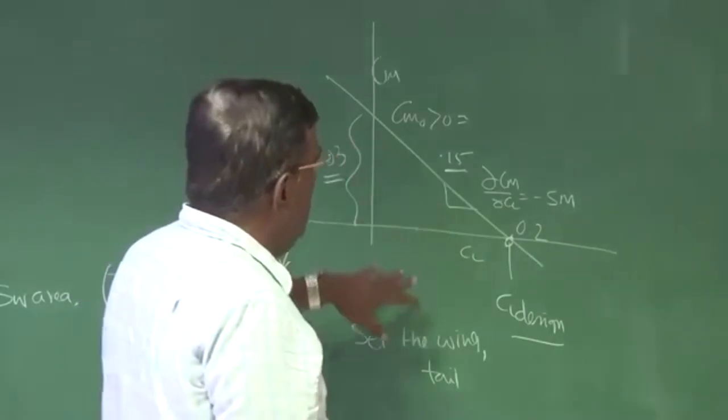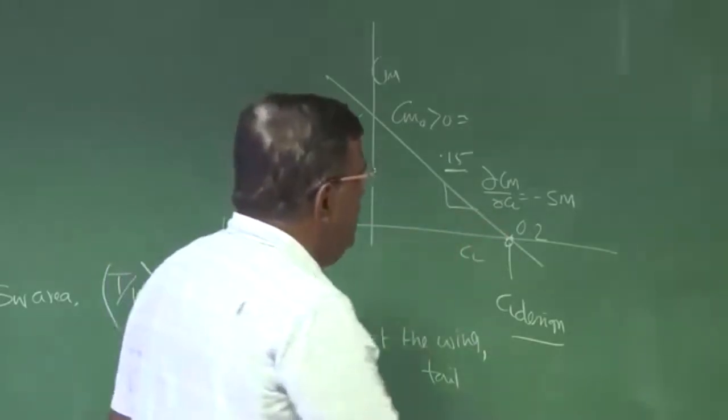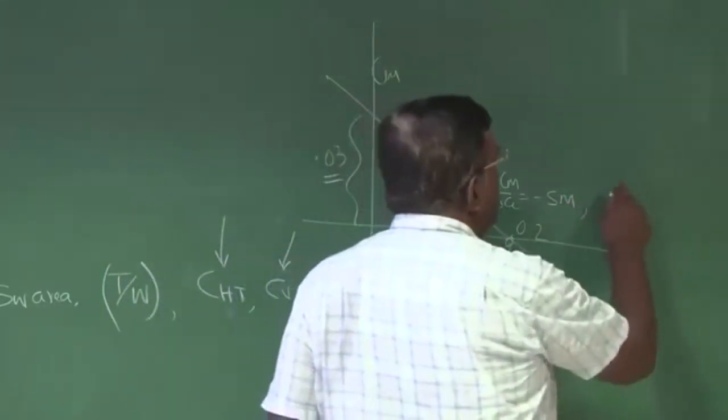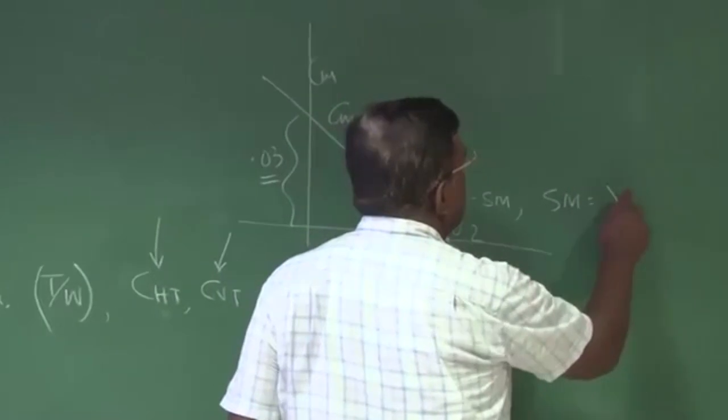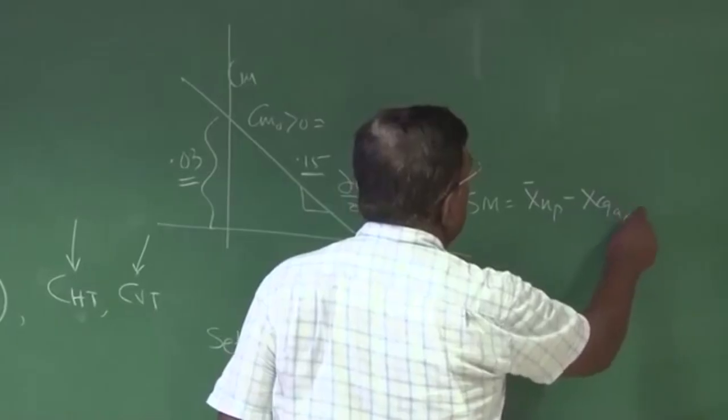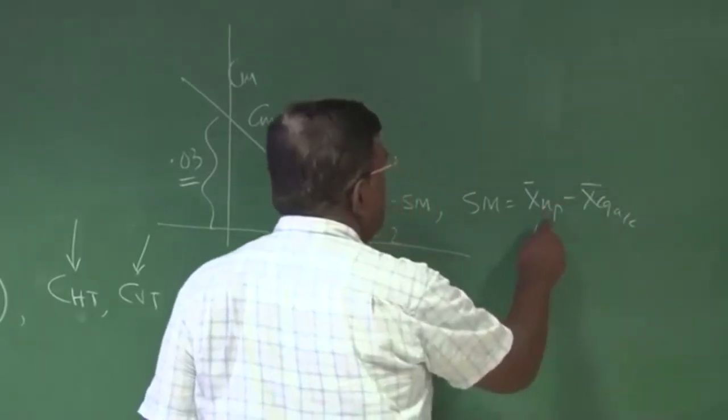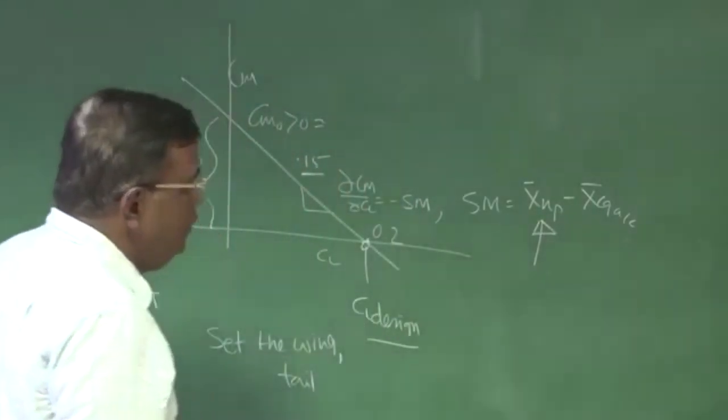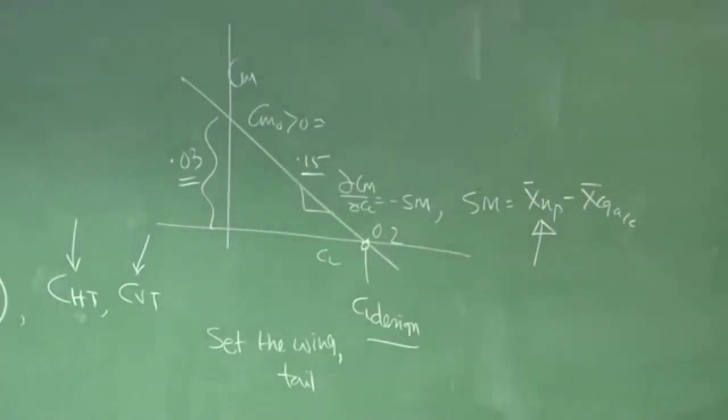So that CM0 is satisfied and dCM by dCL is satisfied. Remember, for static margin, this is neutral point minus XCG of the airplane, and we have an expression for how to find neutral point, which largely depends on tail volume ratio. All these things we have done.